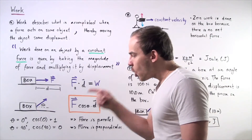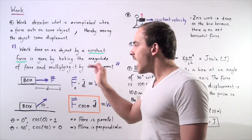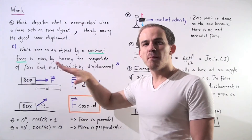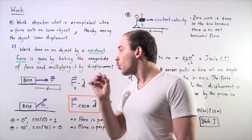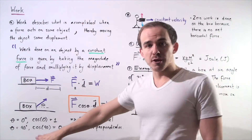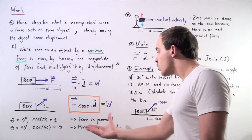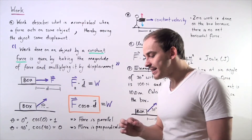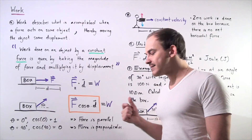What about when the angle is 90 degrees? That means the force acting on the object is perpendicular to the motion, to our displacement. In this case, no work is done on the box. This makes sense mathematically because cosine of 90 degrees is zero, so the whole term becomes zero. Whenever a force acts at a 90-degree angle to displacement, zero work is done.